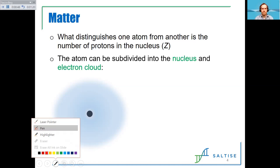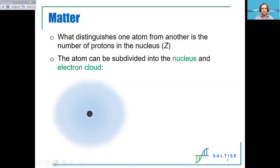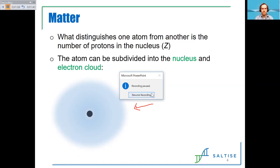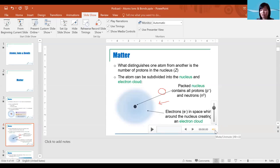If your laser pointer gets stuck, press Escape and then you can access the menu again. You can choose the pen tool and change the pen color — I'll use red — so you can annotate while you narrate and record what's happening on the slide. You can also pause your recording if you want to take a break, gather yourself, and then continue. When you're done, hit Escape and all of that will be captured.